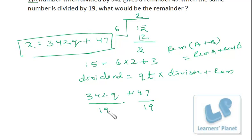Now 342q + 47. Since 342 is a multiple of 19, you will get remainder 0, and 47 divided by 19—19 times 2 is 38—so the remainder is 9. The total remainder is 0 + 9, which is already less than 19. So your final remainder is 9.